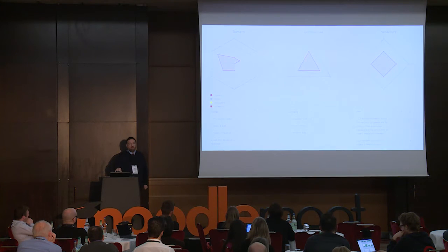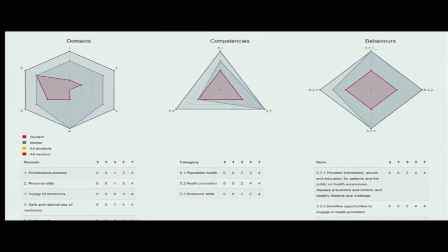In the corporate world, these are used for actually assessing whether people on a yearly basis are achieving what they're supposed to in their job, or even at interview stages. The one I was showing earlier — this is one of the visualizations you can get for competency frameworks. It's a three-tier framework where each one can show the level of competency you have at different levels in different areas, and over time you're expanding your knowledge.